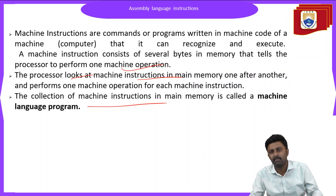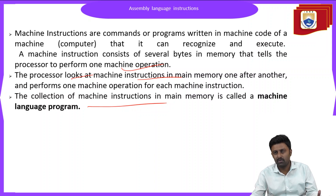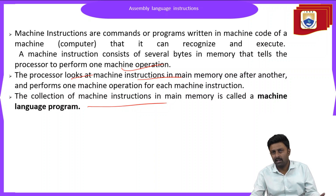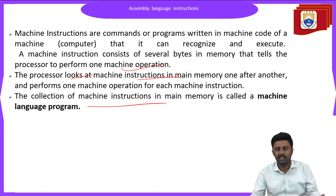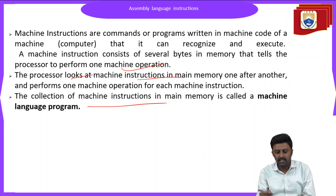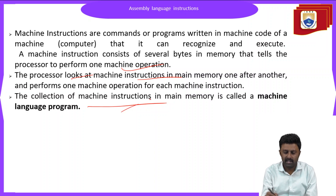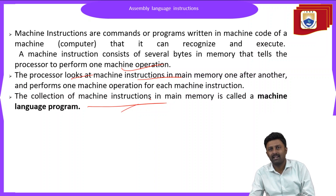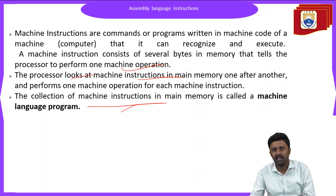As we have already seen in the previous videos, there are two types of languages: high level language and low level language. In the low level language, we have two types — machine level language and assembly language. Such instructions which are written are called the machine language program.